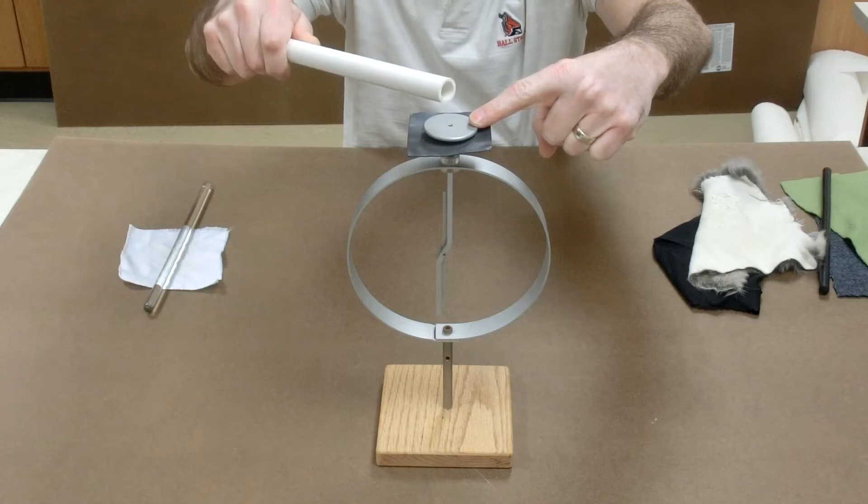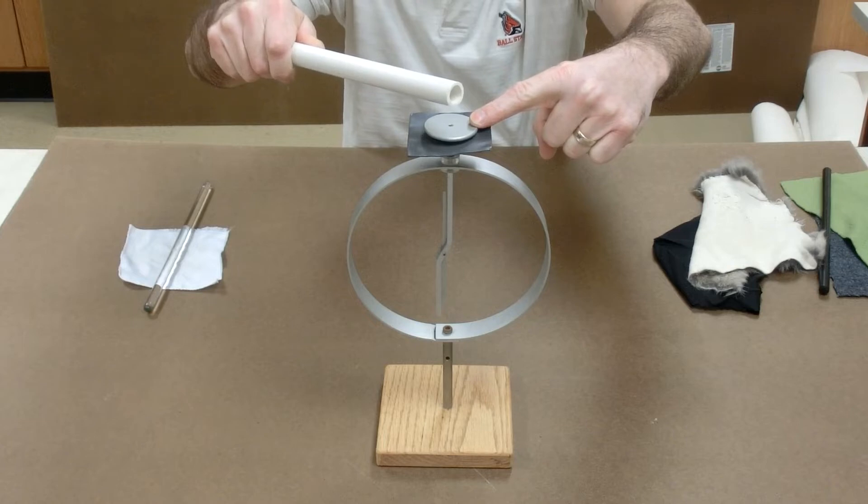So I ground the electroscope with my finger while the charged rod is near. This is forcing electrons out of the electroscope, making the electroscope positive.